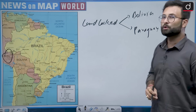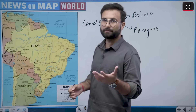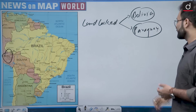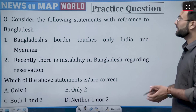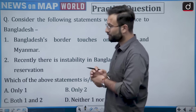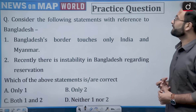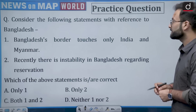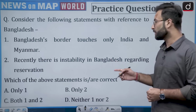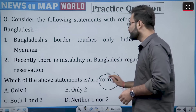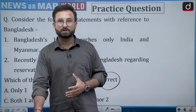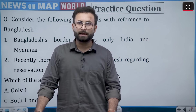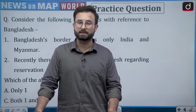Now moving to the practice question for you. Consider the following statements with reference to Bangladesh: Statement 1 — Bangladesh border touches only India and Myanmar. Statement 2 — Recently there is instability in Bangladesh regarding reservation. Which of the given statements are correct? You can attempt this question and answer in the comment box. With that, I would like to wrap up this session. I will see you in the next episode. If you have not subscribed to the channel, please subscribe. Have a nice day.